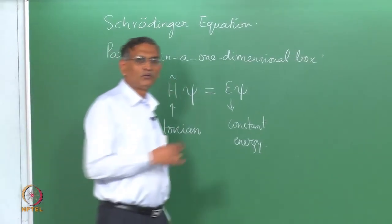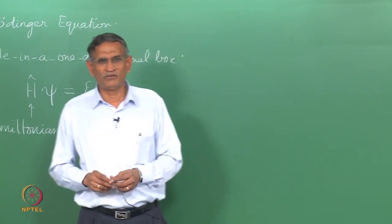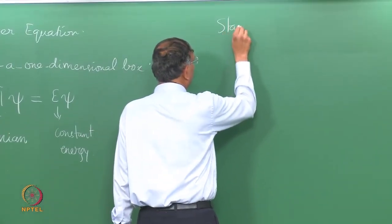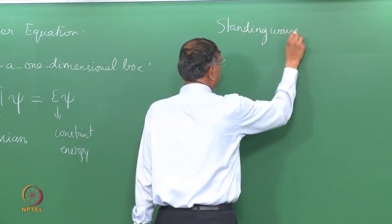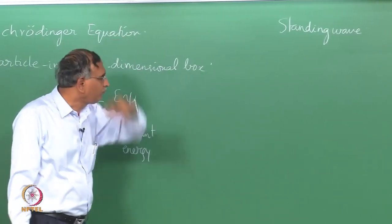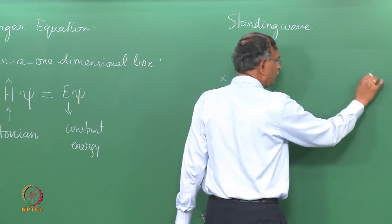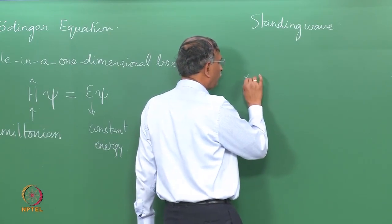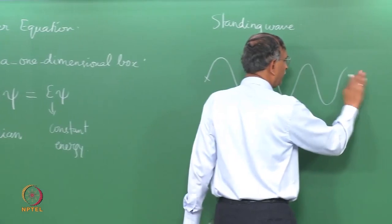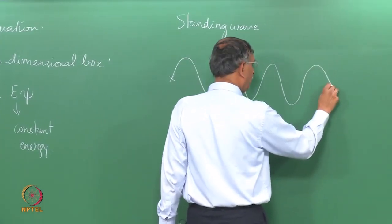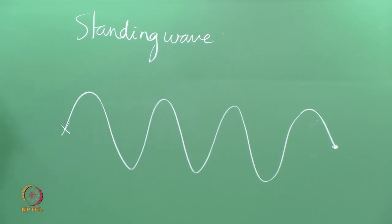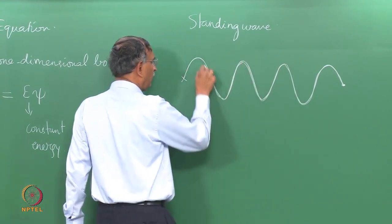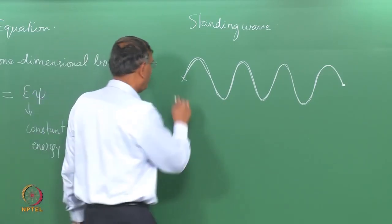We can do a very simple example of a standing wave to understand how this equation comes about. A standing wave is something that happens between fixed points — the wave motion of a particle fixed at its ends. When the wave reflects, it still maintains its form, so the standing wave remains a wave and the amplitudes do not cancel each other.